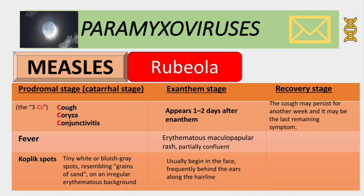One important distinction: rubella causes a three-day rash, while measles causes a six-day rash. So rubella: three days; measles: six days.